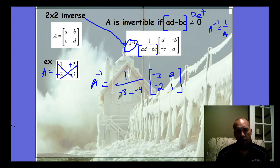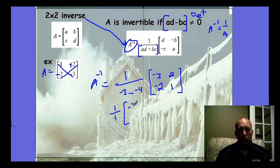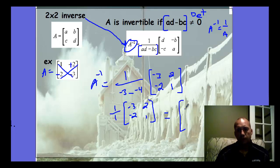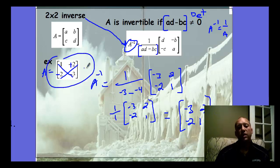The fraction here is 1 over (negative 3 plus 4), which is 1. So we're multiplying by 1, and this becomes the inverse matrix: negative 3, 2, negative 2, 1. This matrix is the inverse of the original — it undoes what that matrix would do if you were multiplying by it.